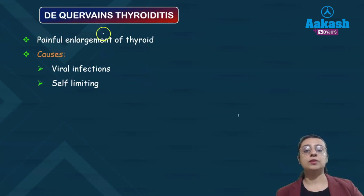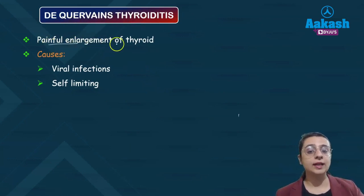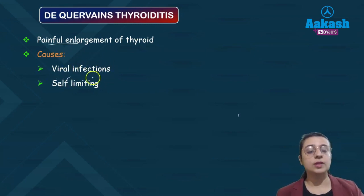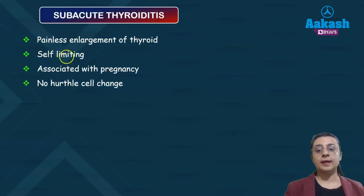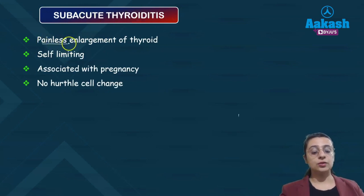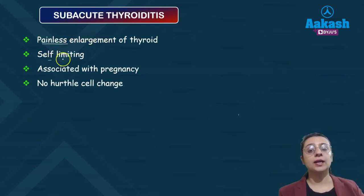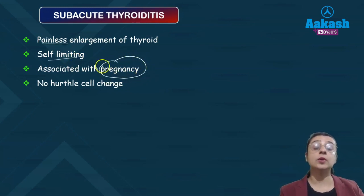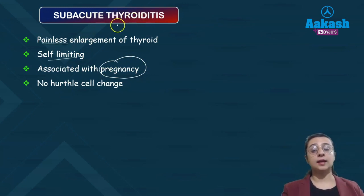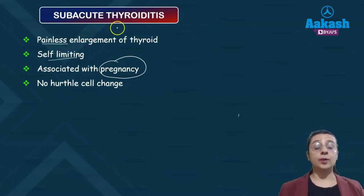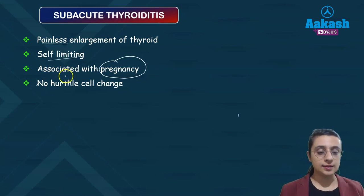De Quervain's thyroiditis is a painful enlargement of the thyroid associated with viral infections and is usually self-limiting. Subacute thyroiditis is a painless, self-limiting enlargement associated with pregnancy. Subacute lymphocytic thyroiditis also shows abundant lymphoid follicles but is differentiated from Hashimoto's by the absence of oncocytic (Hürthle cell) change.